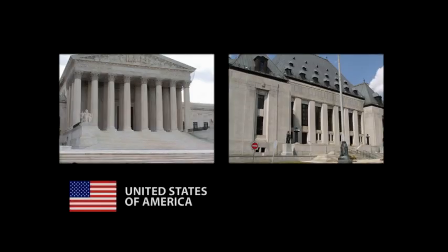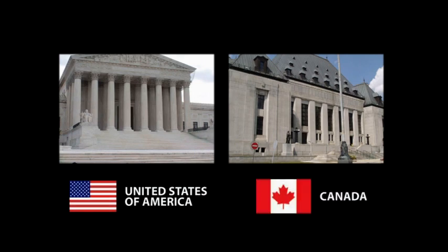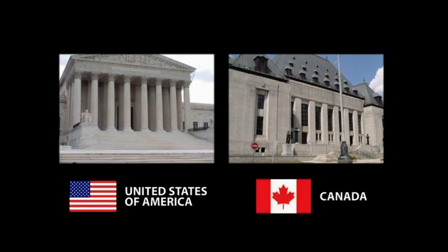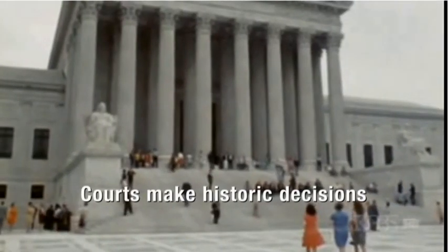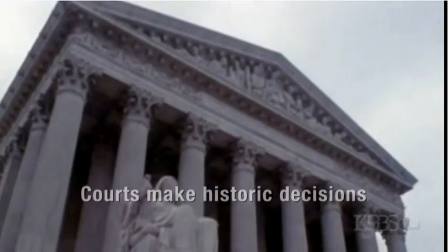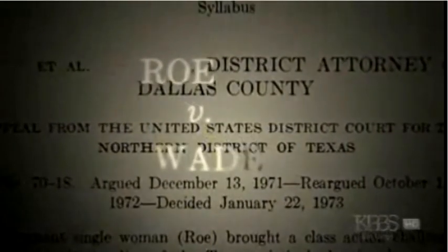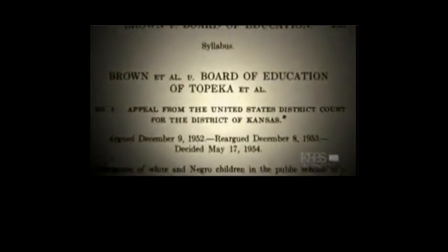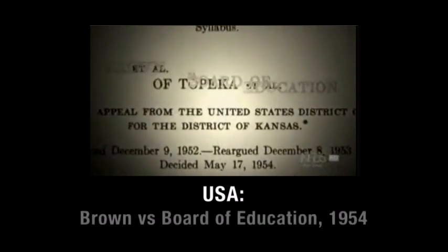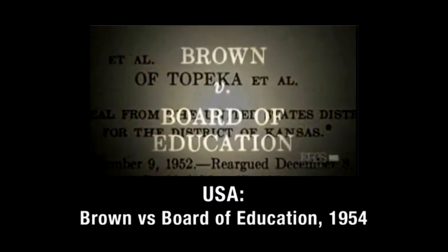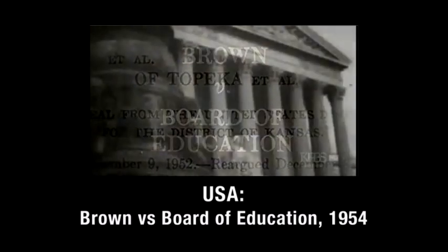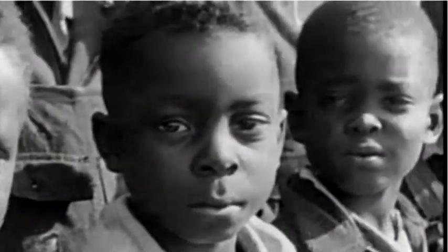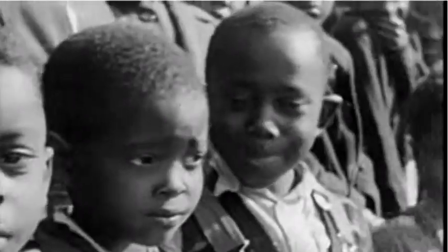Still, independent courts and judges are very important in federal countries, and their decisions can have long-term and significant impact. In the United States and Canada, the Supreme Courts have ruled that laws banning abortion were unconstitutional, decisions which have had a great impact on many people. Another important United States Supreme Court decision was the famous Brown versus the Kansas City Board of Education ruling in 1954, which banned the practice of forcing Black American children into segregated schools.